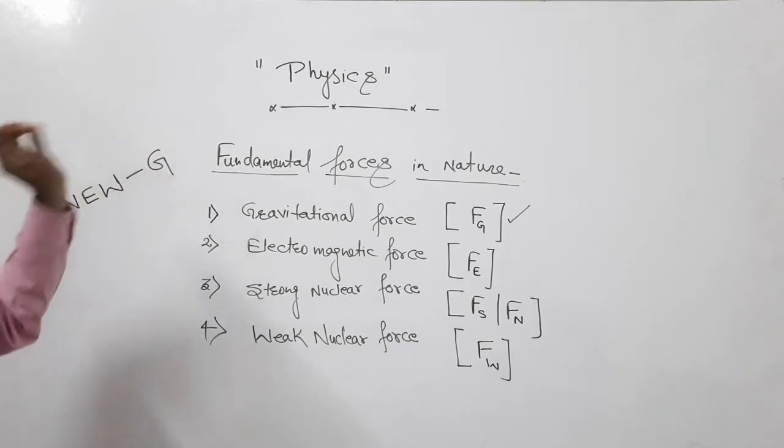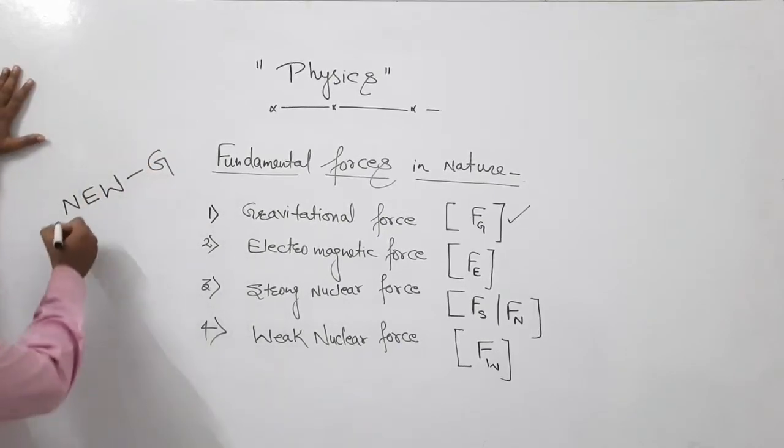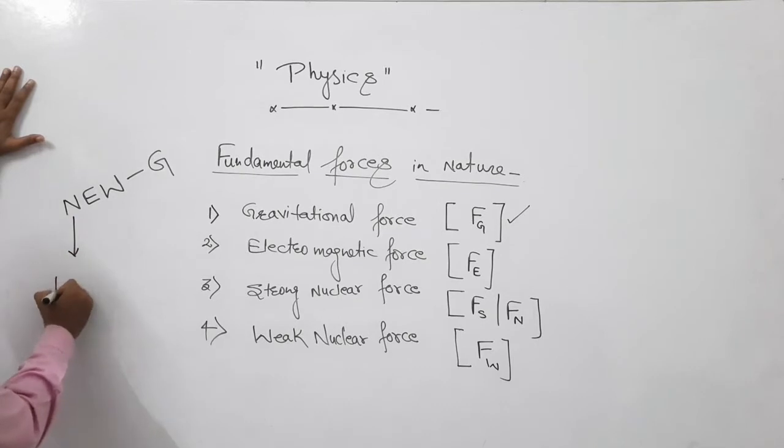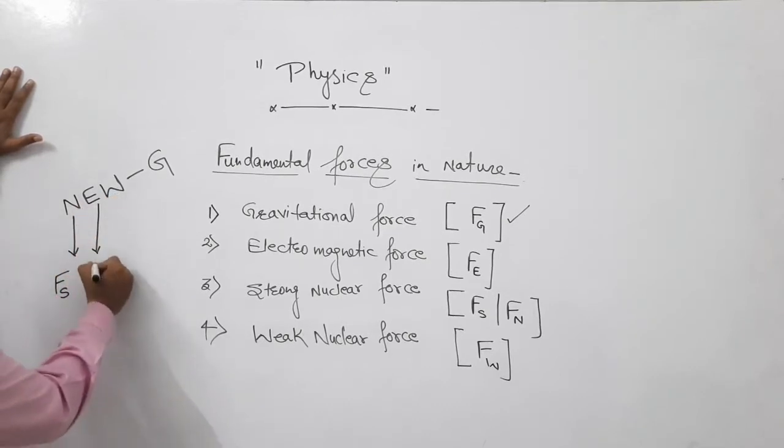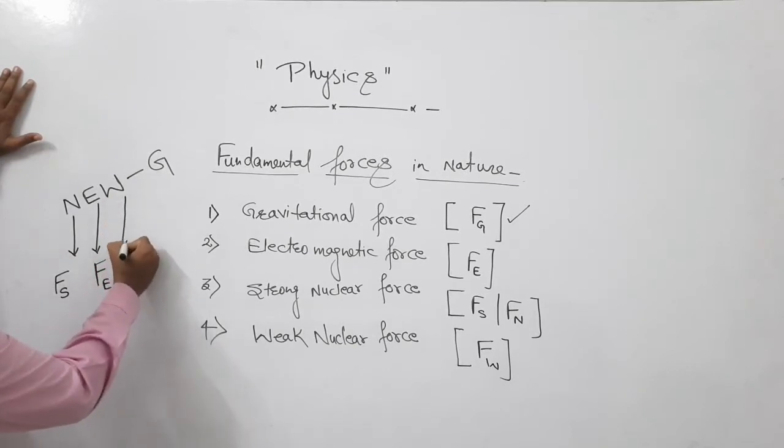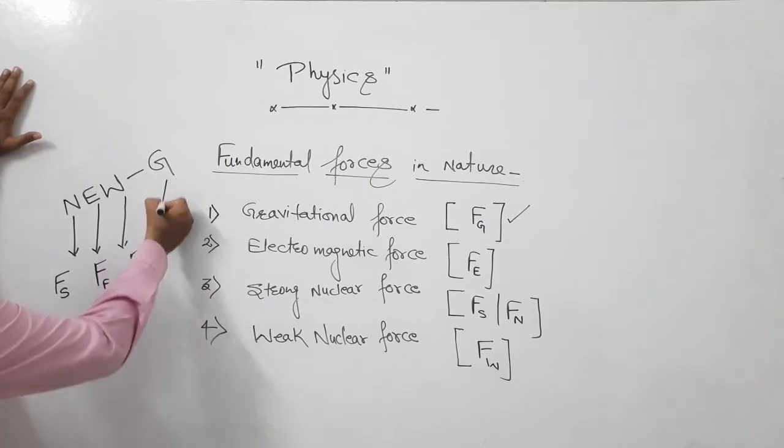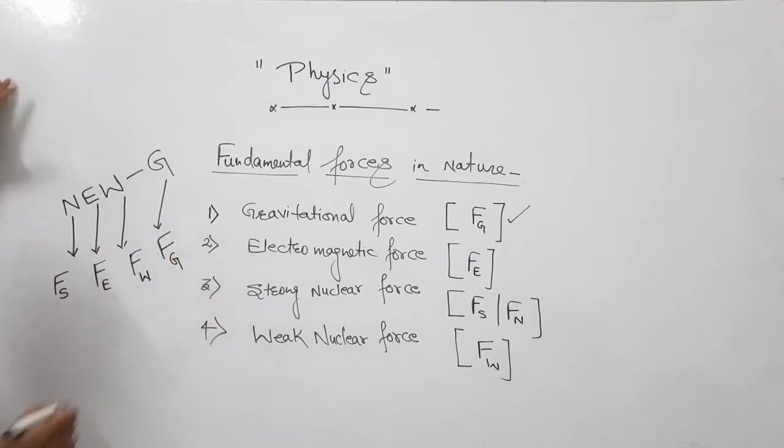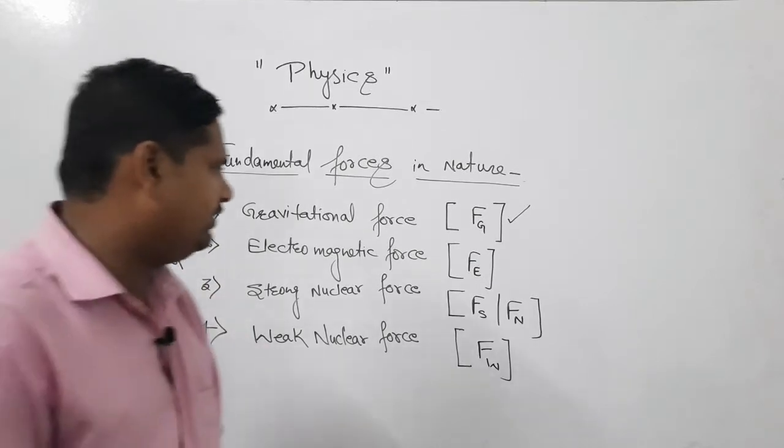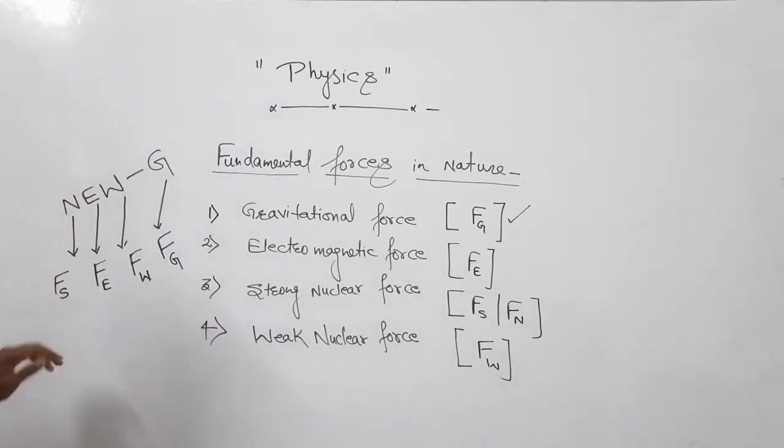That trick's name is 'new G'. Just like you've heard names like Parle G, Junior G, similarly you make a trick called new G. N means strong nuclear force. E means electromagnetic force. W means weak nuclear force. And G for gravitational force.